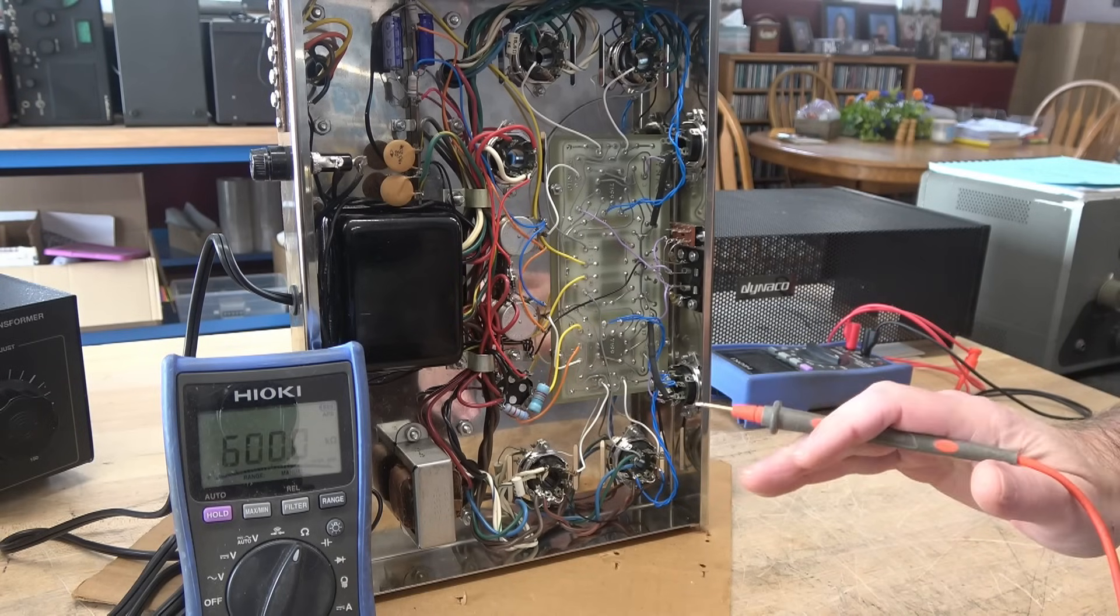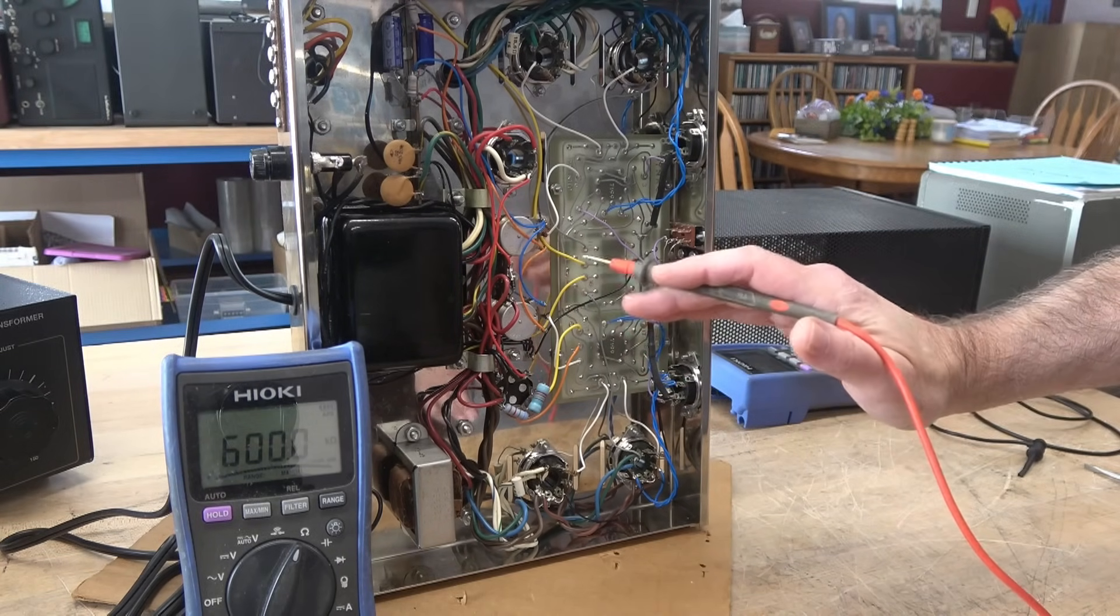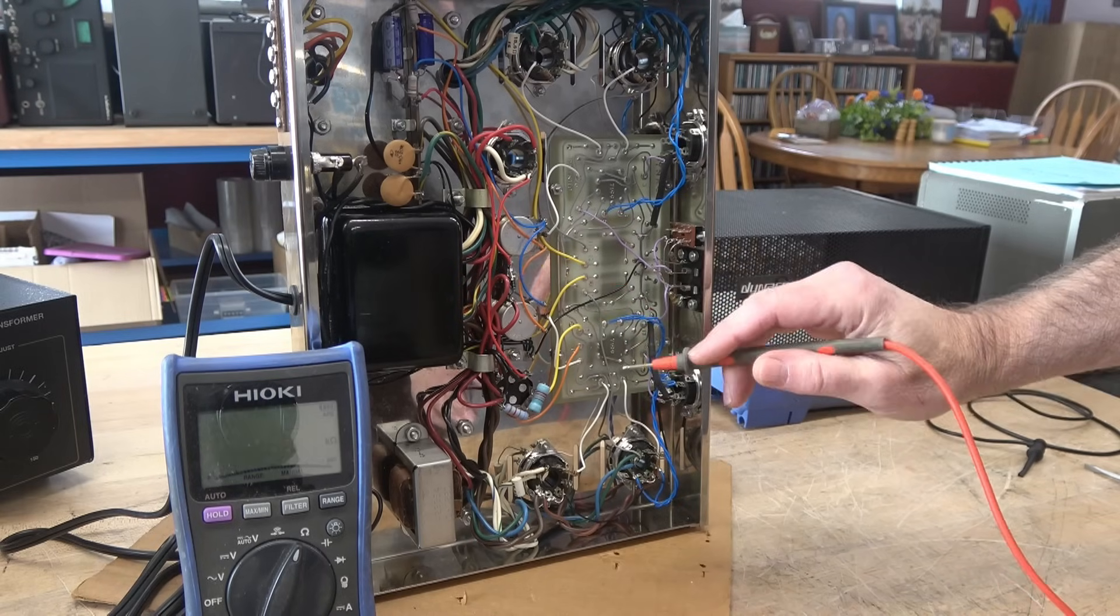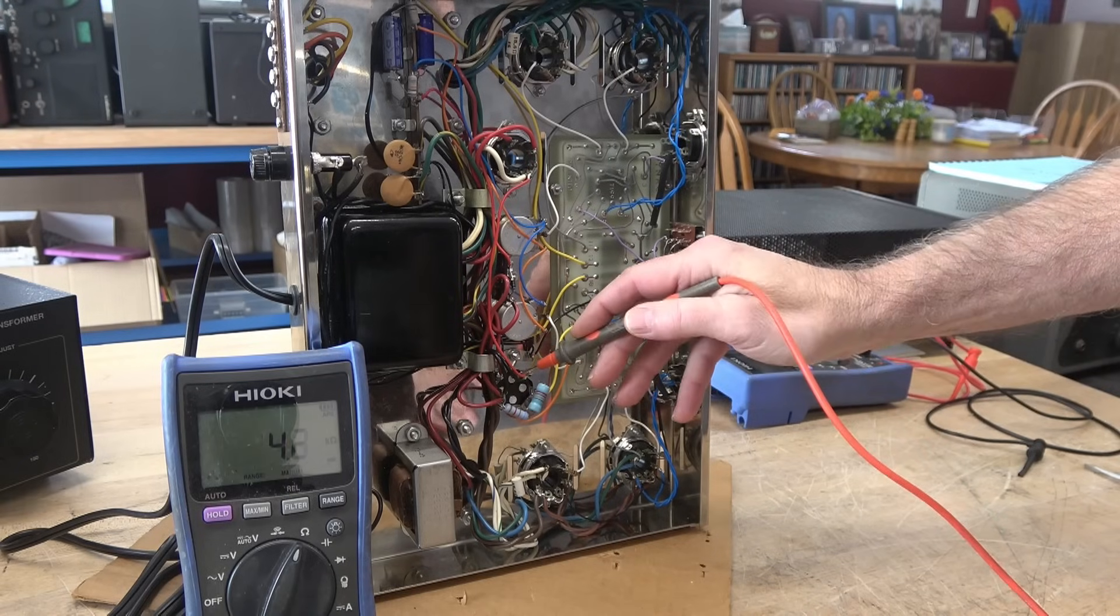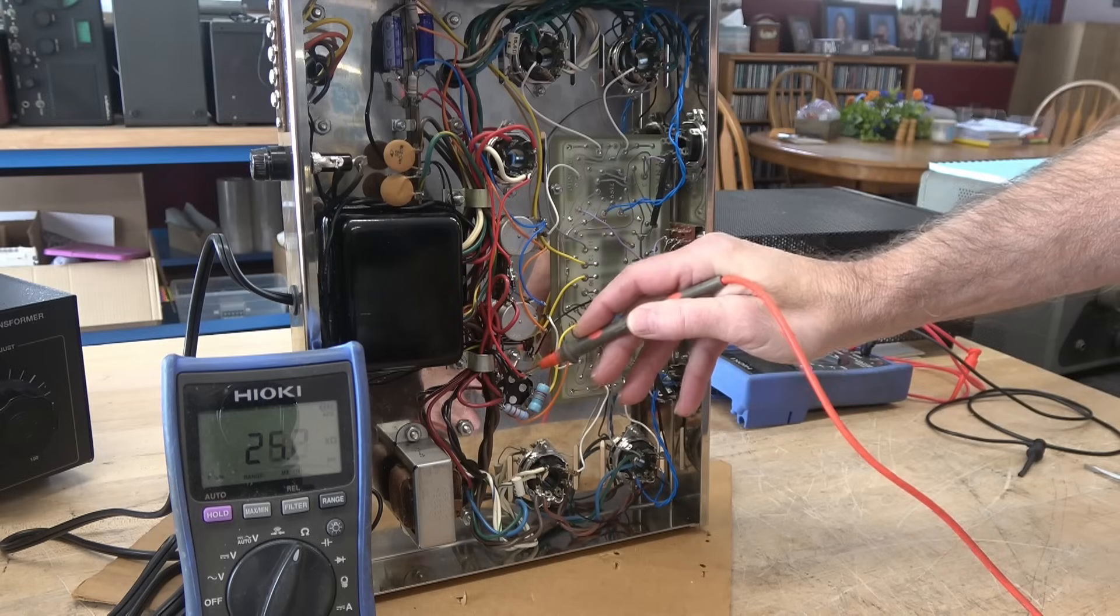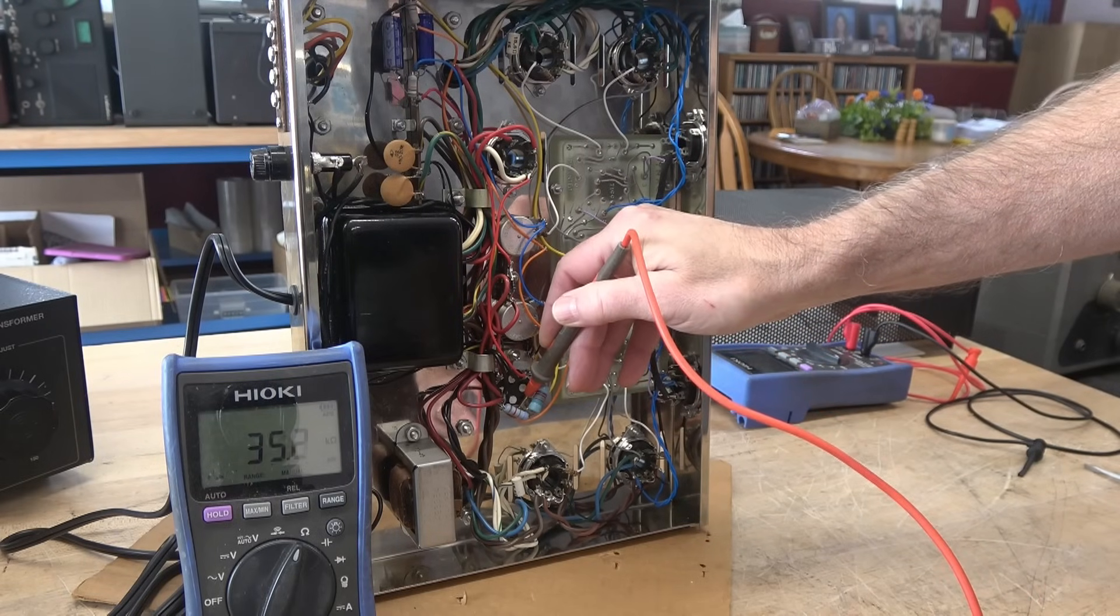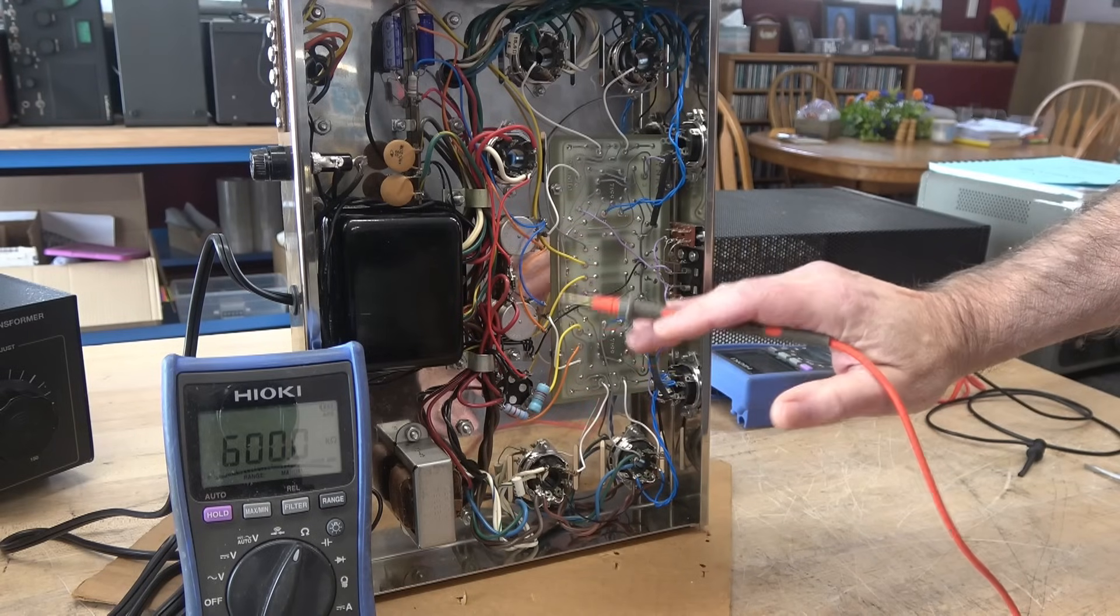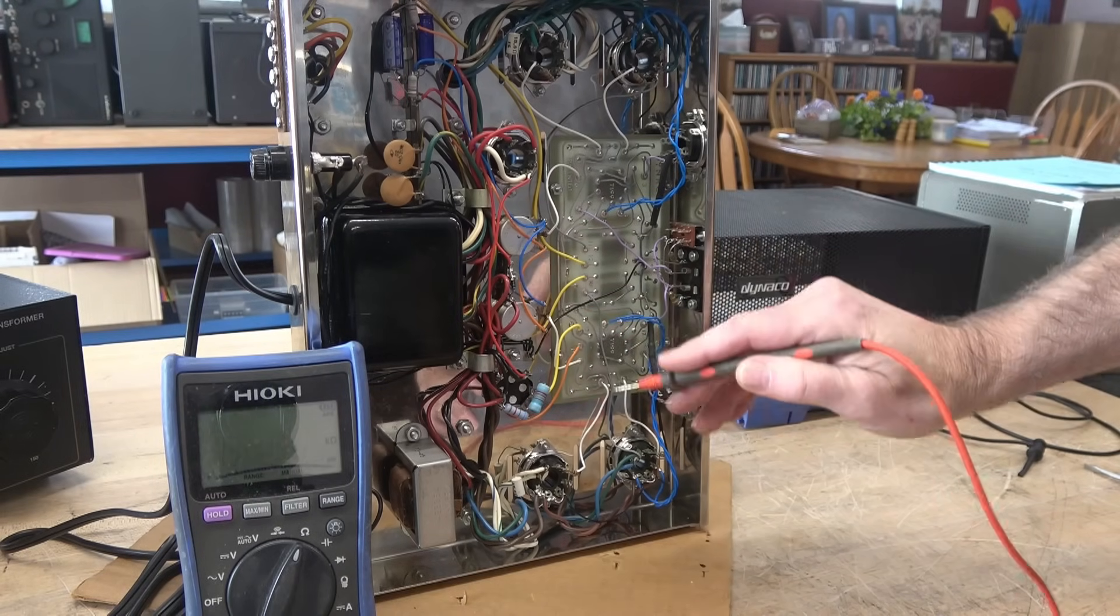In wiring part three, I verified the output of the power transformer and ensured negative bias was present, and that's very important. Next thing I'm going to do is simply check the filter caps. Make sure we don't see any direct shorts, because when we insert tubes and power this thing up, there's going to be high voltage available. If there's a short somewhere, it'll find it.